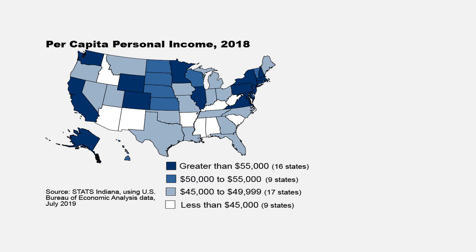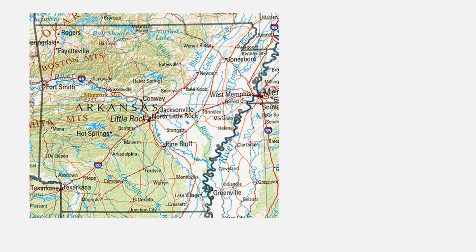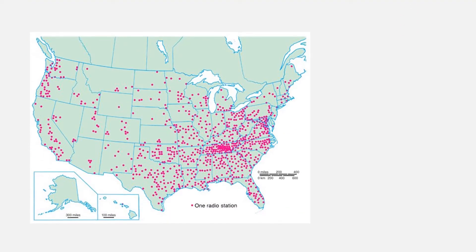Let's do some practice. This map is showing per capita personal income in the United States — what kind of map is it? It's thematic; it's got a theme and it's showing data. How about this one? It's a map of Arkansas showing roads and cities — it's a reference map, not showing data. How about this one? It's showing all the locations of radio stations — it's thematic. The theme is radio stations, and it's also showing us data.